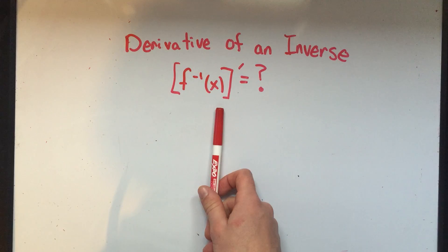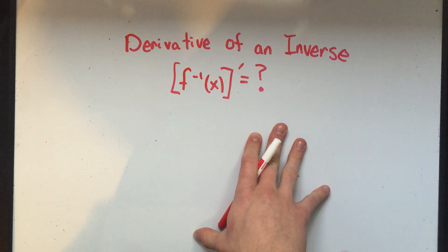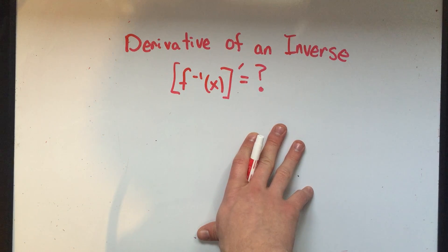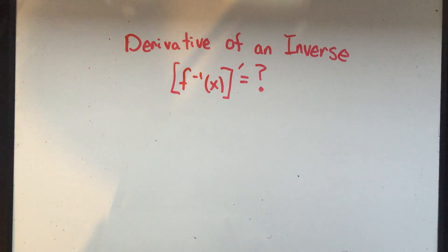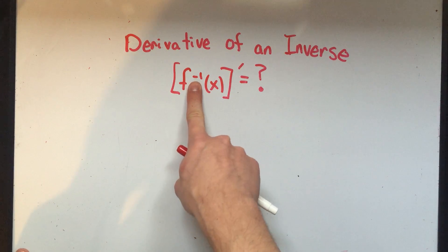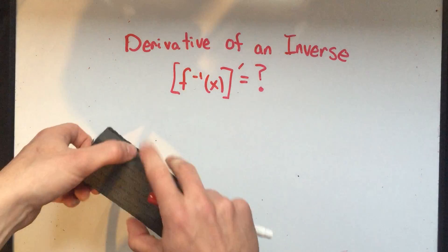But what if you had an inverse function? Is that the same? Because maybe there are some inverse functions like arc tangent or ln of x. How do you take the derivative of those? So I want to answer this question: what's the derivative of an inverse function? And remember that little negative one doesn't mean to the negative first power - this means the inverse of f of x.